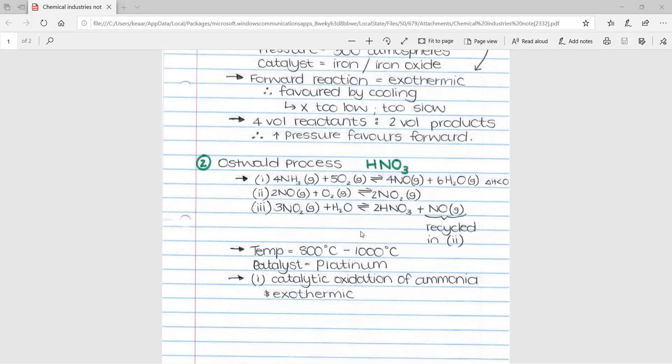We then move on to our second process, which is the Ostwald process. This is the formation of HNO3. There are three different types of equations that fall under this process. I've written all three of them down here.